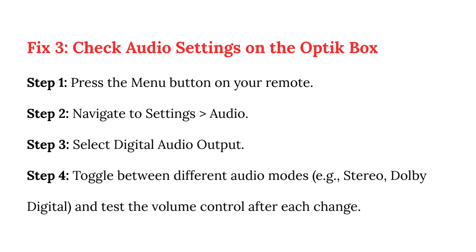Fix 3: check audio settings on the optic box. Step 1: press the menu button on your remote. Step 2: navigate to Settings > Audio. Step 3: select digital audio output. Step 4: toggle between different audio modes, e.g. stereo or Dolby Digital, and test the volume control after each change.